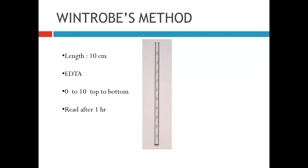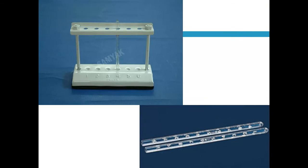The second method is the Wintrobe method. In this method, the tube length is 10 cm, and the tube is EDTA-coated internally. Unlike the Westergren tube, the markings on the Wintrobe tube go from 0 to 10 mm. The test is also read after 1 hour, and a specific stand is used for Wintrobe method tubes.